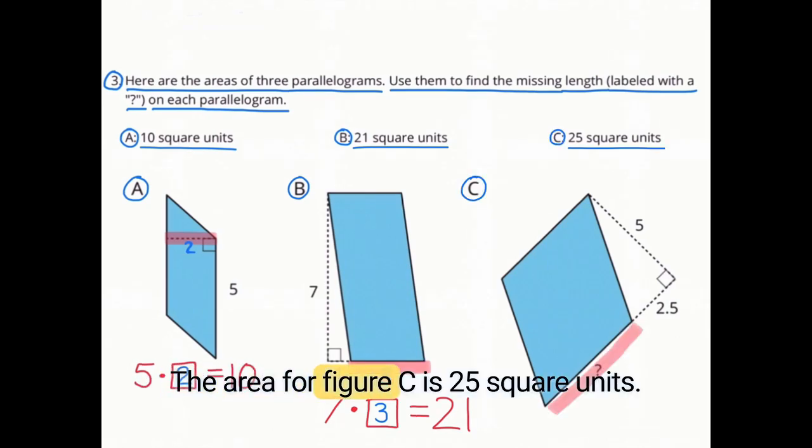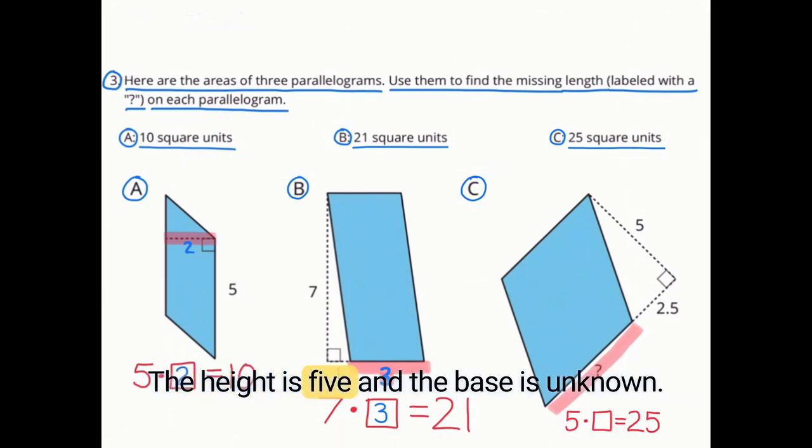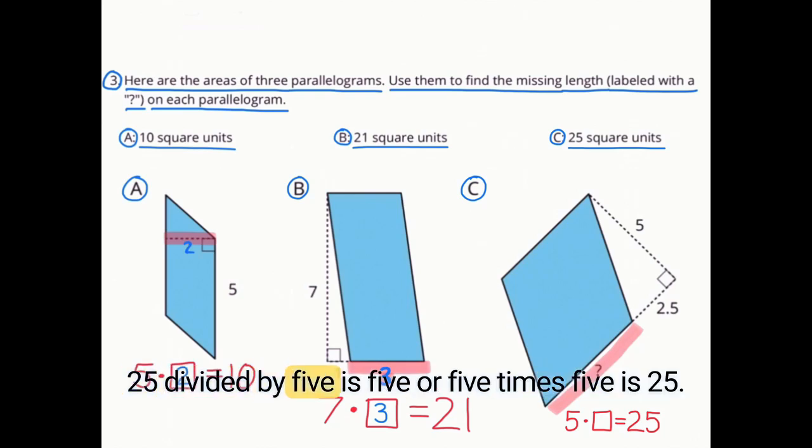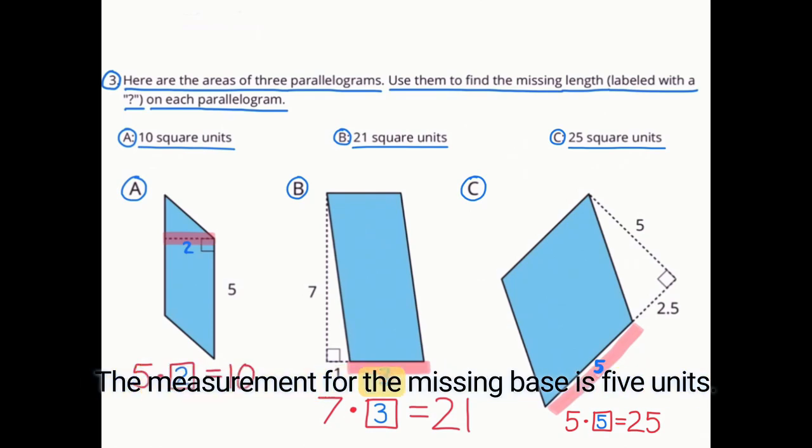The area for figure C is 25 square units. The height is 5, and the base is unknown. 25 divided by 5 is 5, or 5 times 5 is 25. The measurement for the missing base is 5 units.